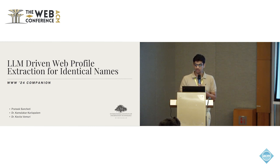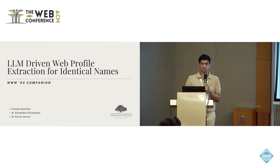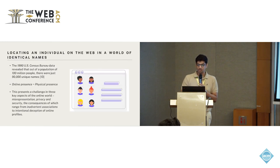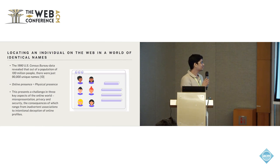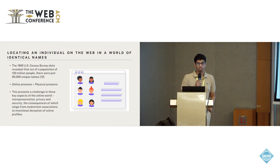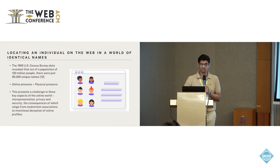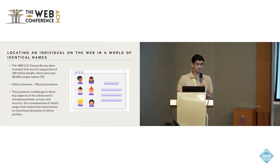This approach helps in accurately identifying and differentiating individuals online carrying the same name. The problem of person name disambiguation is what this addresses. Our research stems from the proliferation of identical names — according to a 1990 US census, about 100 million people shared about 90,000 names, meaning around 1,000 people sharing the same name, and in 2024 the numbers will be even more staggering.